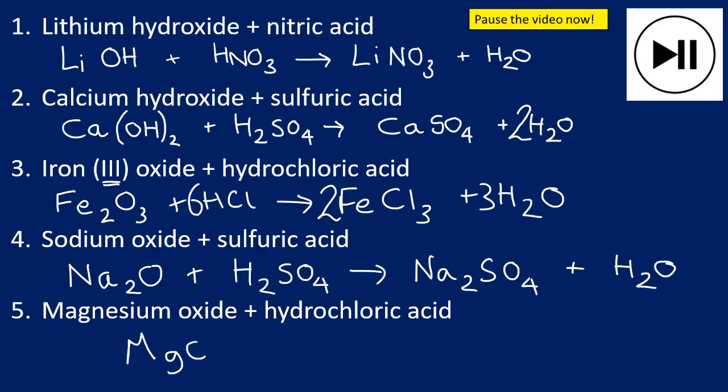Magnesium oxide, MgO, plus hydrochloric acid, HCl, will produce magnesium chloride. Magnesium is 2+, chloride is 1-, so MgCl2 plus H2O. For balancing, I require two in front of the HCl, and that's balanced.